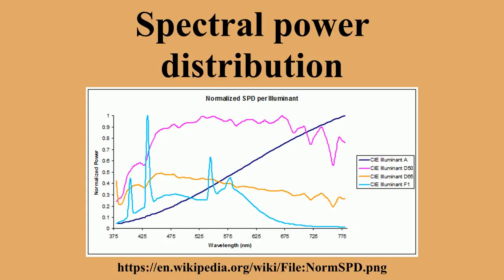Optical properties such as transmittance, reflectivity, and absorbance, as well as the sensor response, are typically dependent on the incident wavelength, source SPD, and matter. The spectral power distribution over the visible spectrum from a source can have varying concentrations of relative SPDs.